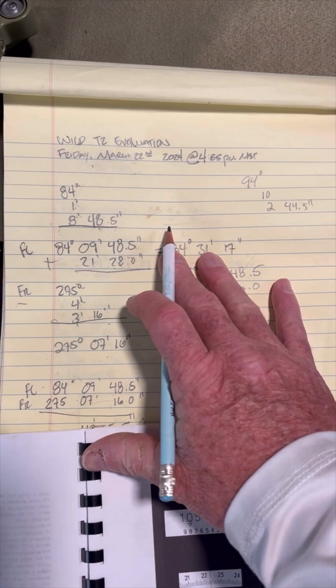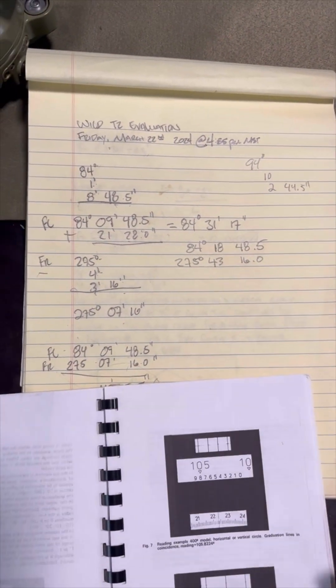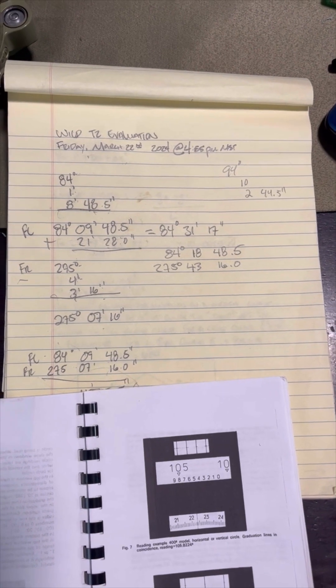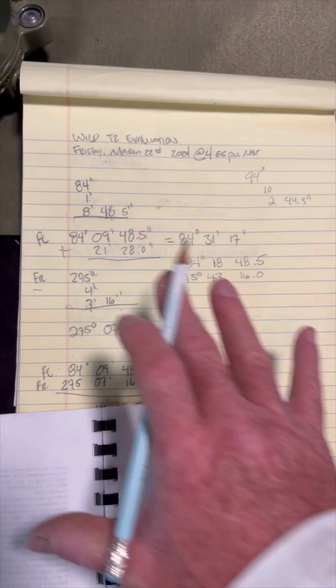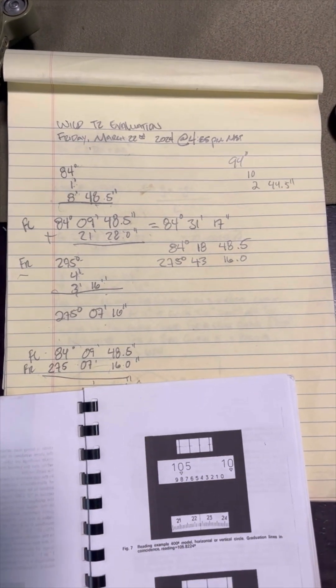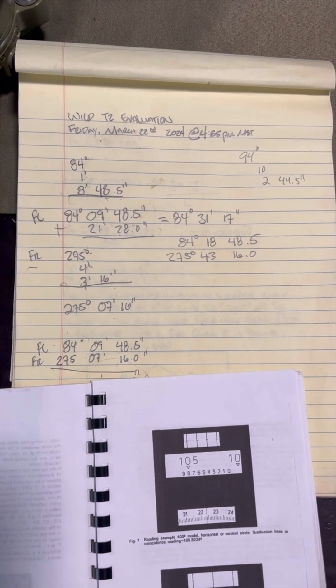So these are my notes from, it turns out, last Friday on March 22nd is when I evaluated the instrument. And this is where the blunder comes in. Now, there's still some error within the instrument, but not nearly as much as I computed when I computed the zenith distance.